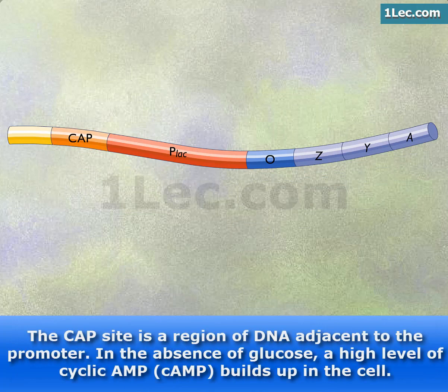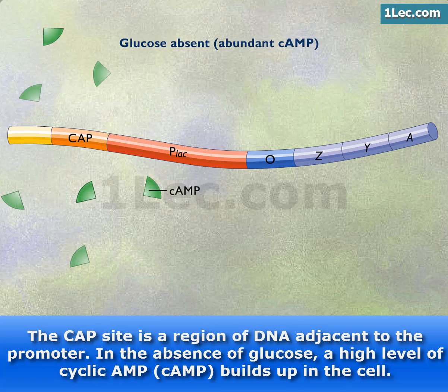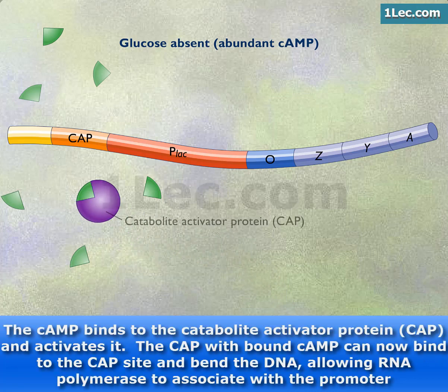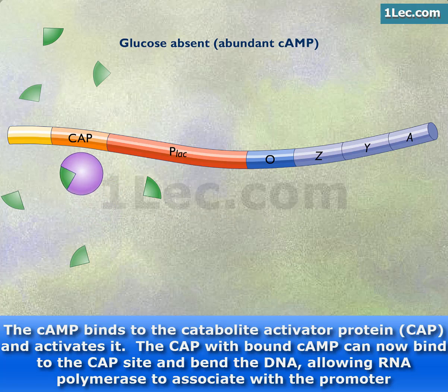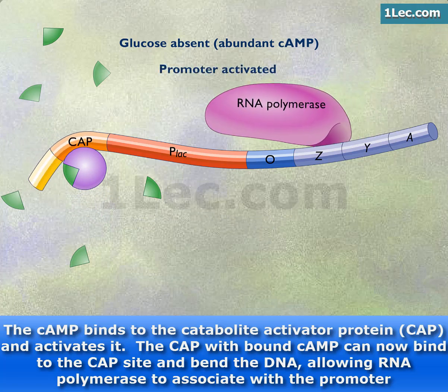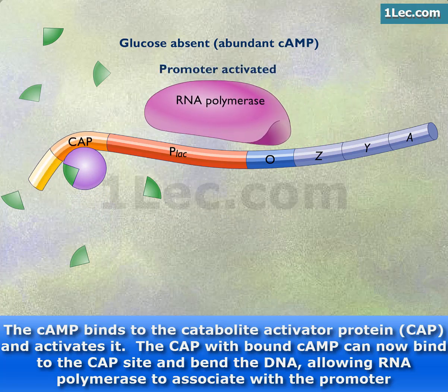The CAP site is a region of DNA adjacent to the promoter. In the absence of glucose, a high level of cyclic AMP, cAMP, builds up in the cell. The cAMP binds to the catabolite activator protein, CAP, and activates it. The CAP with bound cAMP can now bind to the CAP site and bend the DNA, allowing RNA polymerase to associate with the promoter.